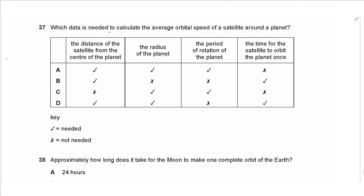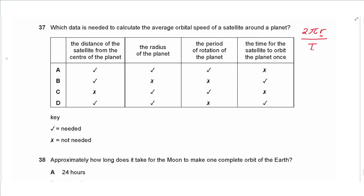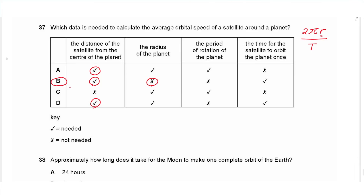Question 37: to calculate the average orbital speed of a satellite, we use v = 2πr / T, where r is the distance from the satellite to the centre of the planet and T is the orbital period. The radius of the planet itself is not needed. The answer is B.